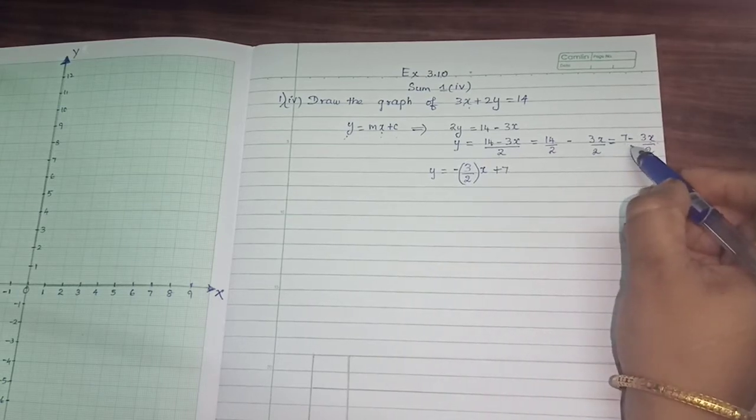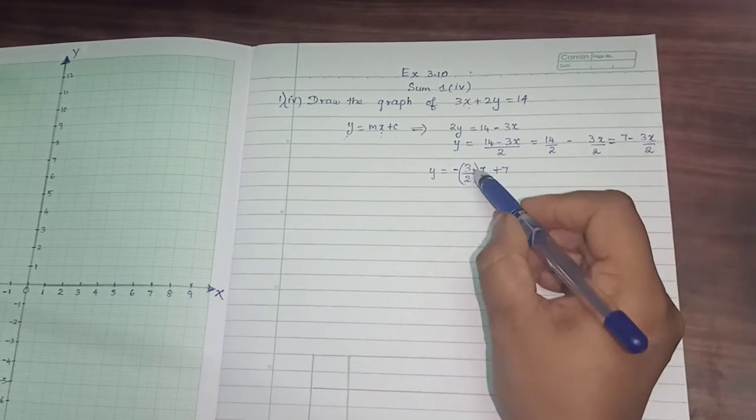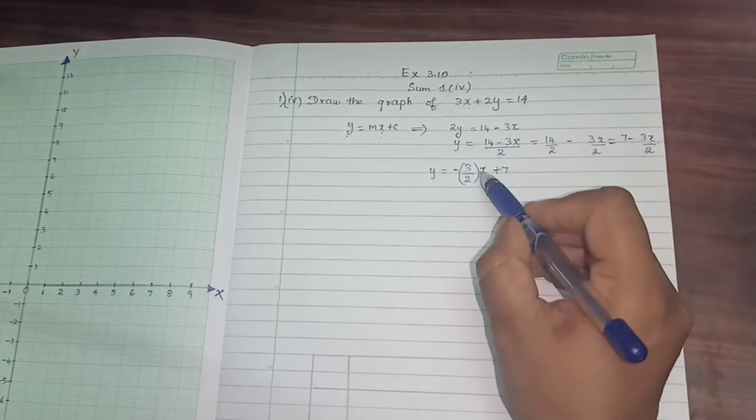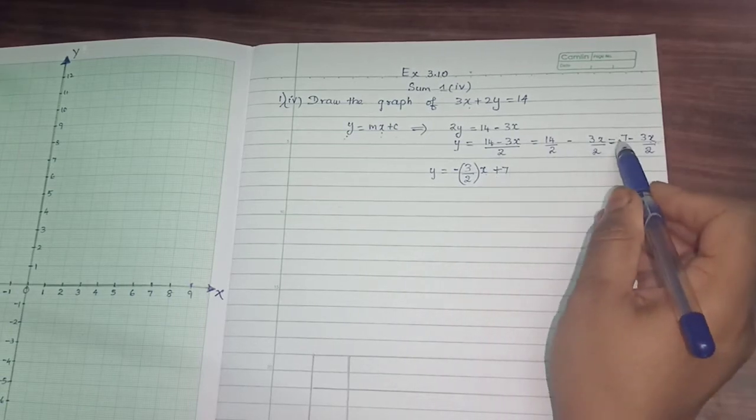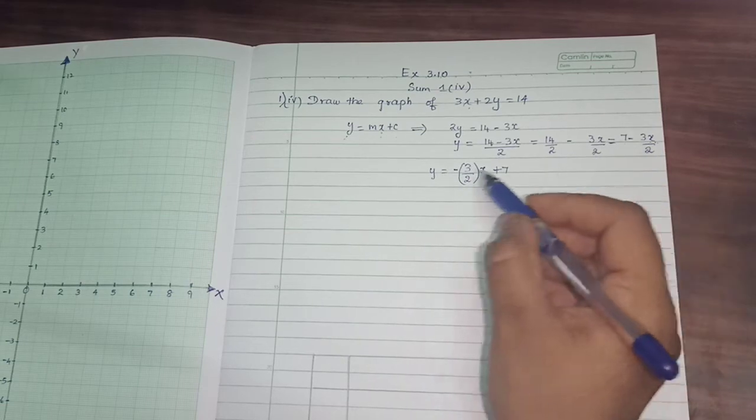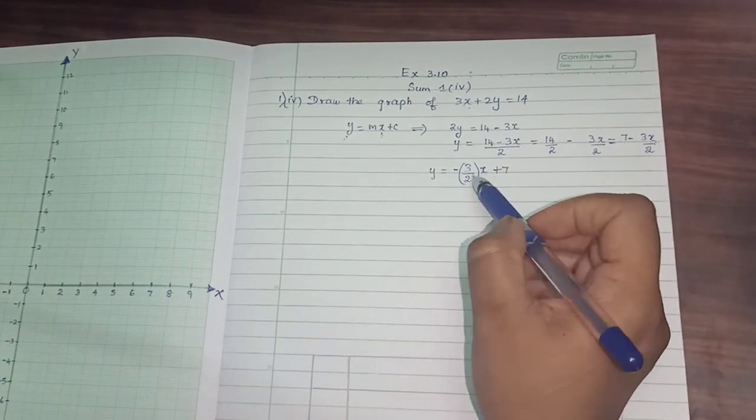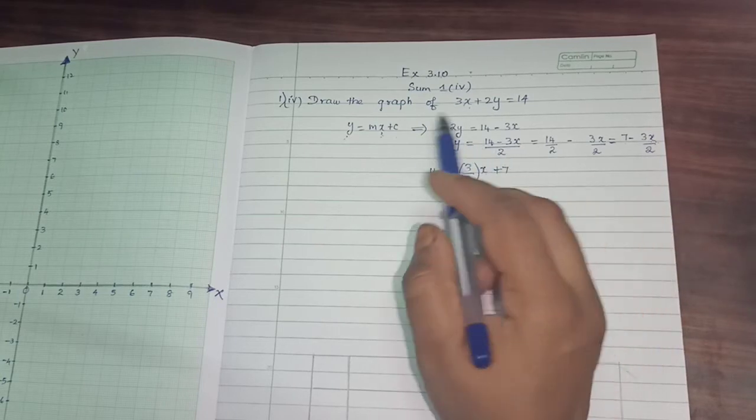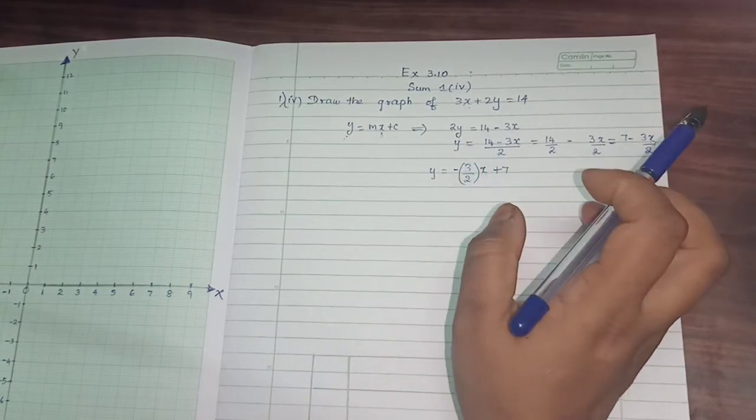The same thing only, I am exchanging minus 3x by 2 to minus 3 by 2 of x. That is multiplied into x only. Same, it doesn't change the value. Plus 7, 7 is positive. So now we can compare both. It is in the form of y equals mx plus c. The only thing is here, negative sign is coming. That's no problem.